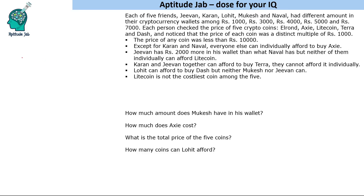The price of any coin was less than 10,000. It is given that except for Karan and Nawal, everyone else can individually afford to buy XC. Since Karan and Nawal cannot buy XC and others can, these two have the least amounts. So Karan and Nawal will have 1000 or 3000 — let us take two cases: Karan has 1000 and Nawal has 3000, and vice versa.